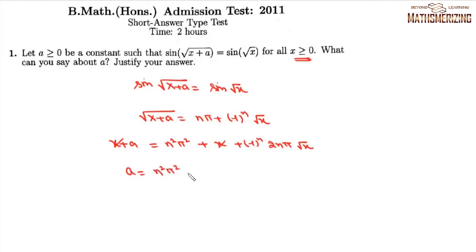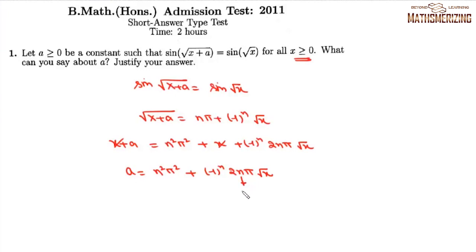The x terms cancel, leaving a = n²π² + (−1)^n · 2nπ · √x. Since this must hold for all x ≥ 0, a must be independent of x, which happens if and only if n = 0. Putting n = 0 gives a = 0, so the condition is satisfied if and only if a = 0.